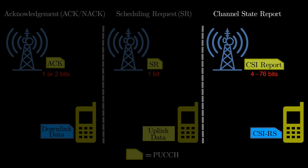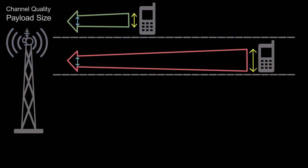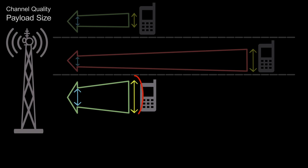So, if UE is sending channel state report as well in PUCCH, then the payload size has to be large enough to accommodate it. In that case, PUCCH needs more resources, even though channel is good.